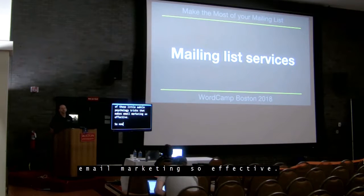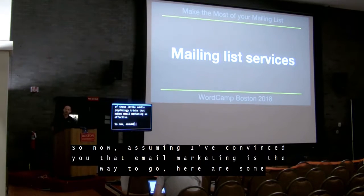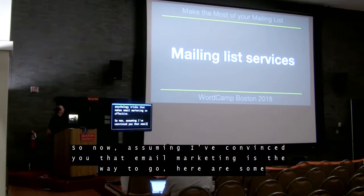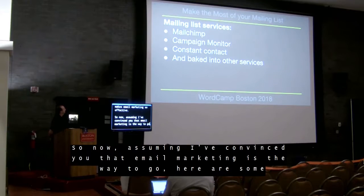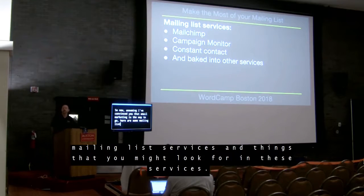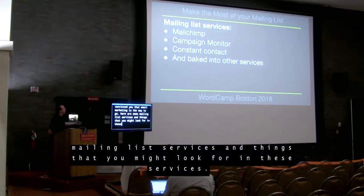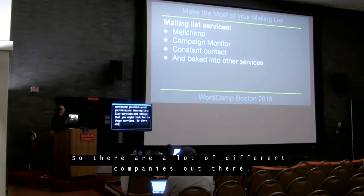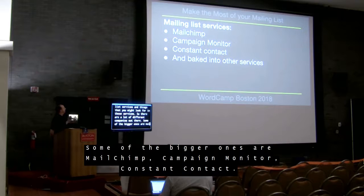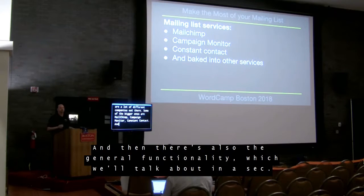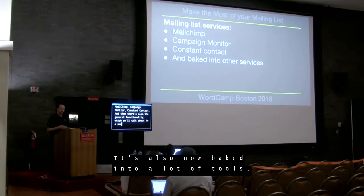Assuming I've convinced you that email marketing is the way to go, here are some mailing list services and things to look for in these services. There are a lot of different companies out there. Some of the bigger ones are MailChimp, Campaign Monitor, and Constant Contact. The general functionality is also now baked into a lot of tools.